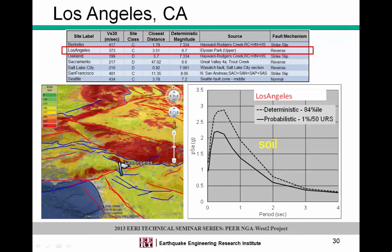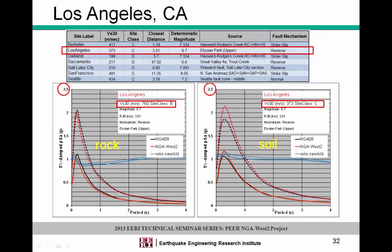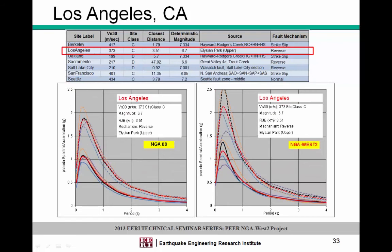In Los Angeles, the probabilistic still controls. Looking at soil conditions, we see the same pattern — a definite increase in spectra for soil conditions. But for rock conditions, both the median and median plus one standard deviation have actually gone down compared to 2008. So if you're on the rock side in LA, your deterministic spectrum has actually gone down, and soil amplification then brings it back up.